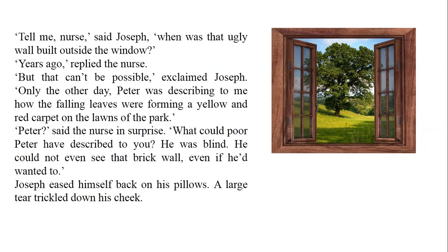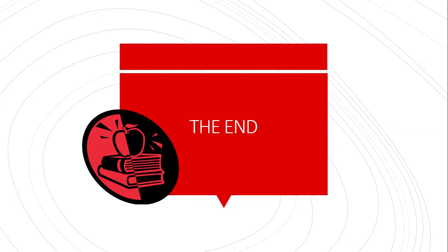Joseph eased himself back on his pillow. A large tear trickled down his cheek — 'trickle' means to move down slowly like a droplet. Joseph realized that Peter was blind and had made up all the stories — all the scenes of the busy street, the city beyond, the park — to keep Joseph hopeful for life. For the first time he had a tear in his eyes when he realized how Peter had worked hard to keep him company and keep him hopeful to regain his health. That's it for today — see you next time.